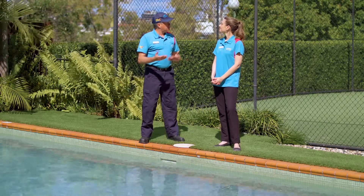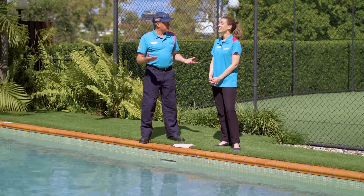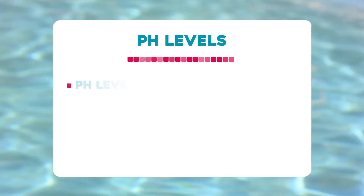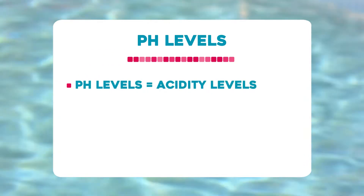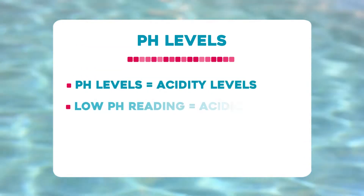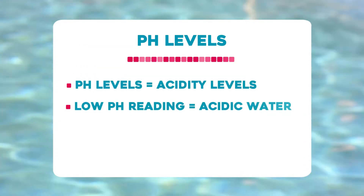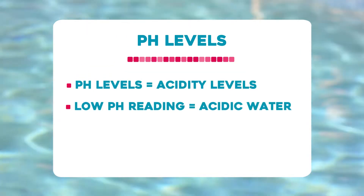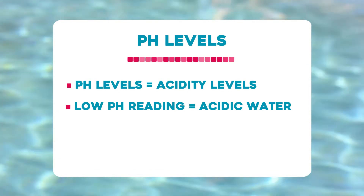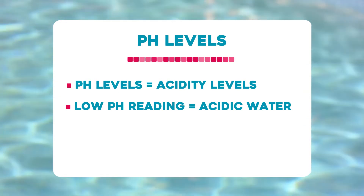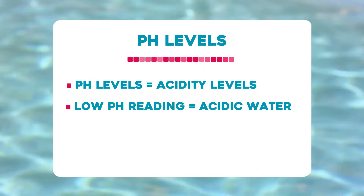Should we start with pH? pH levels refer to the acidity of your pool water. A lower pH reading means that your pool is acidic, which can cause etchings on the sides of your pool and even erode your metal fixtures.